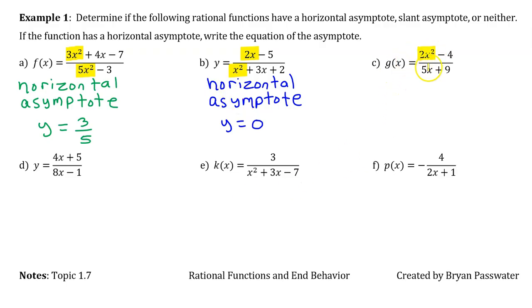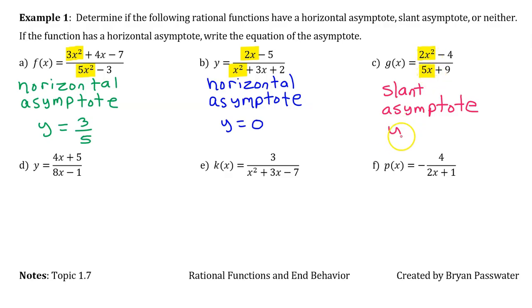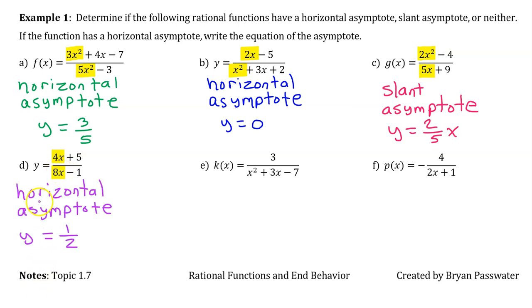In part c, the degree of the numerator is bigger. This means there will not be a horizontal asymptote. However, there will be a slant asymptote, because the numerator degree is exactly one more than the denominator. Simplifying the leading terms gives you 2/5 x — when you get just an x after simplifying, that's when you have a slant asymptote. For part d, the degrees are the same, so we will have a horizontal asymptote at y equals 1/2; the x's cancel out and you are left with 1/2.